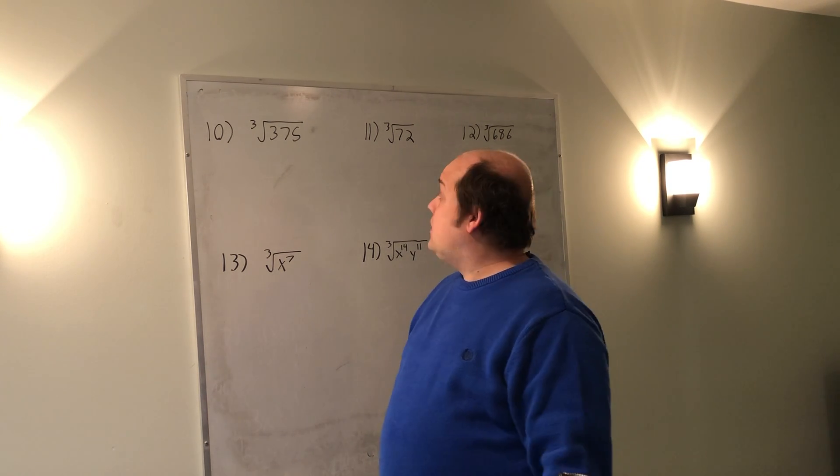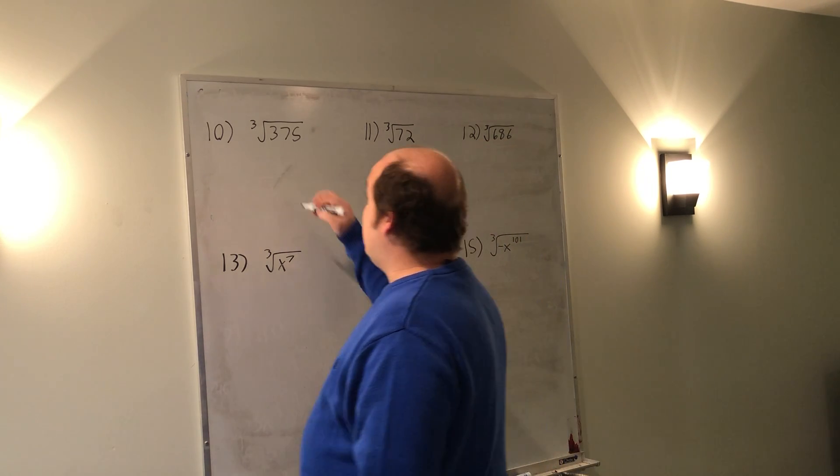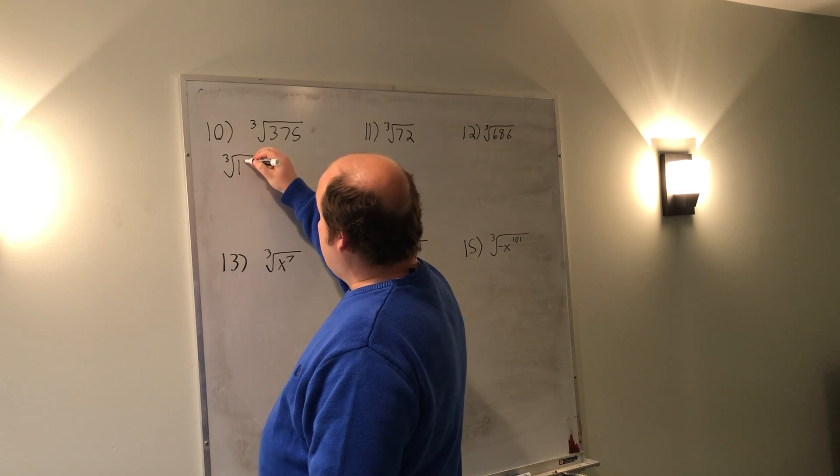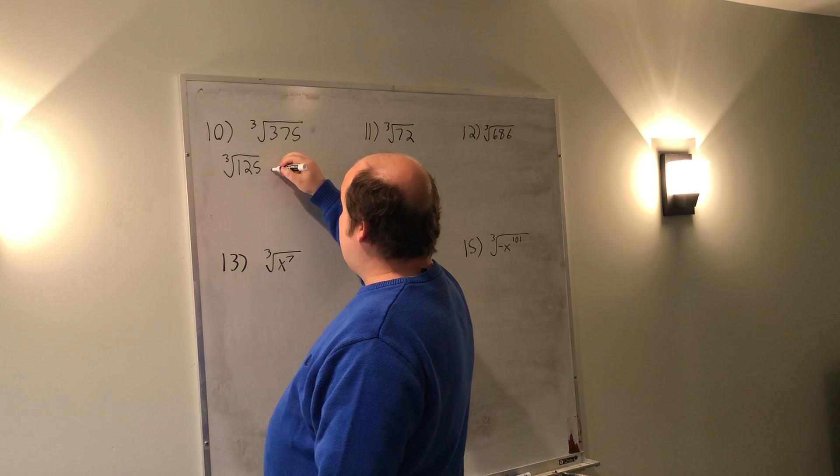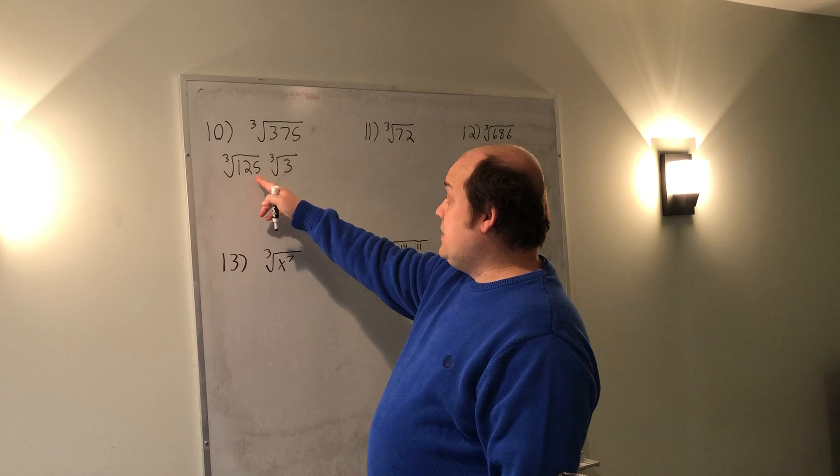So I tried 216. 216 doesn't go in evenly. So I tried 125. 125 does go in evenly, so it becomes 3. When I divide 375 by 125, that means I can really break this down into 125 times 3.